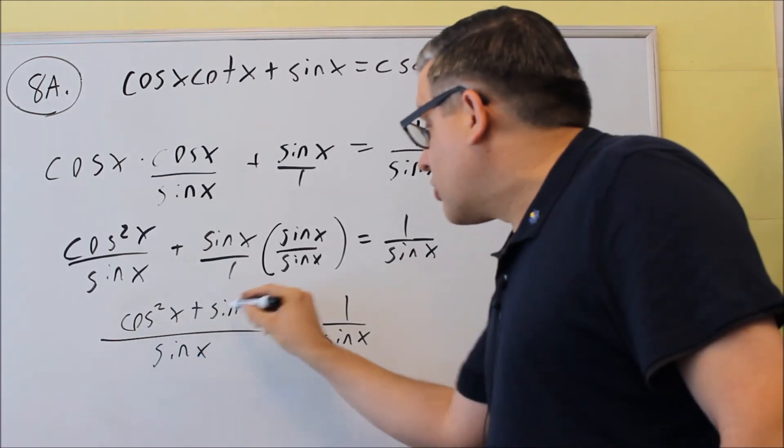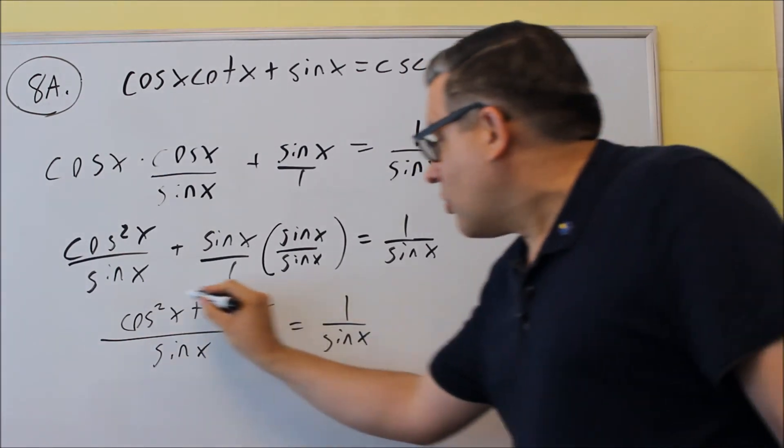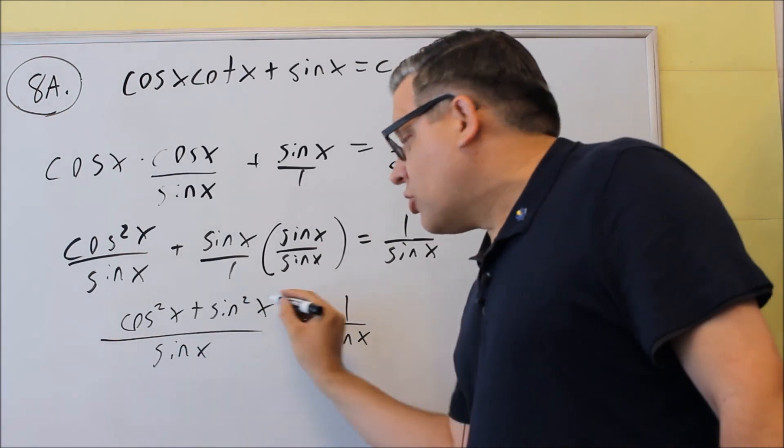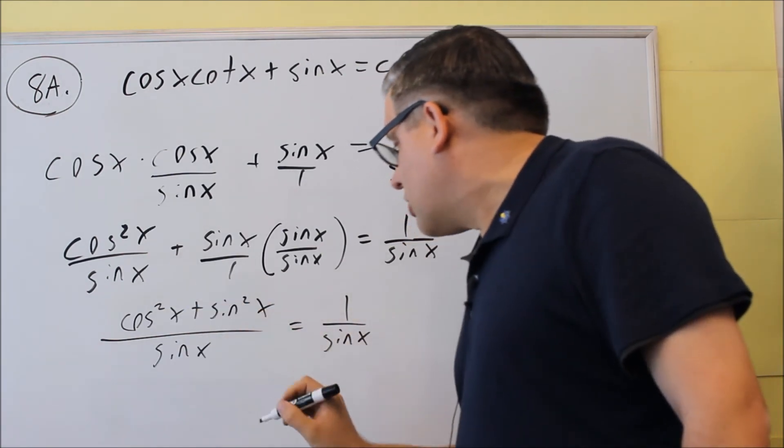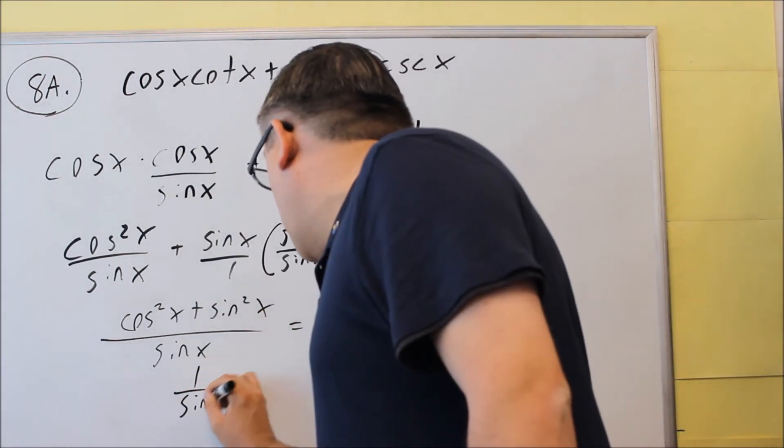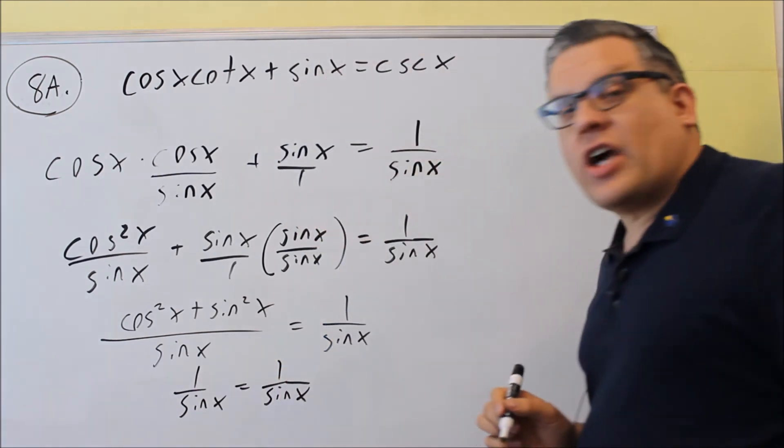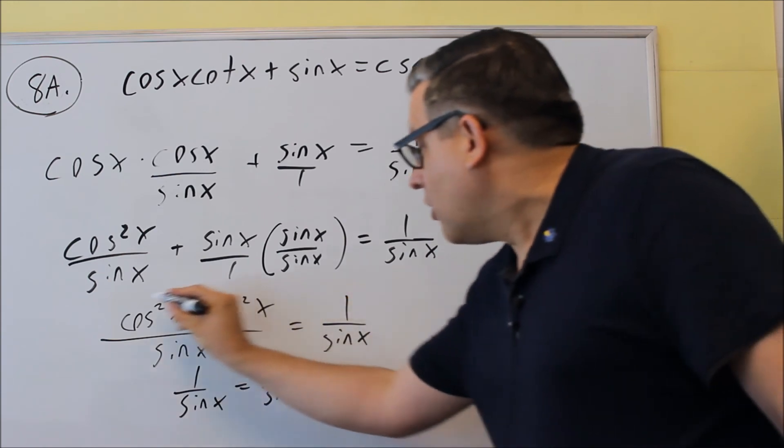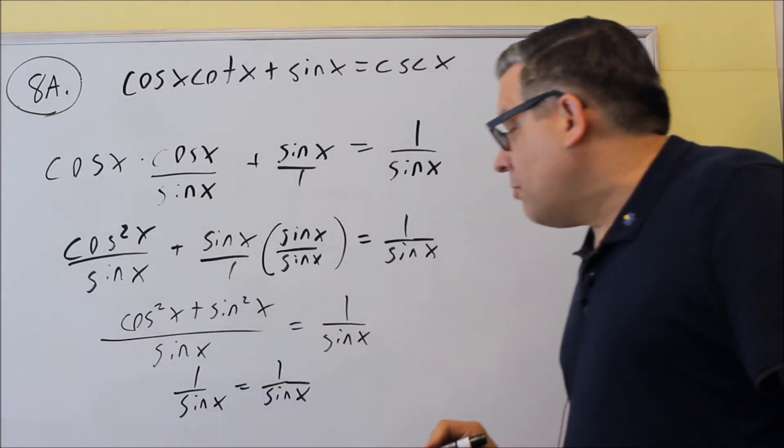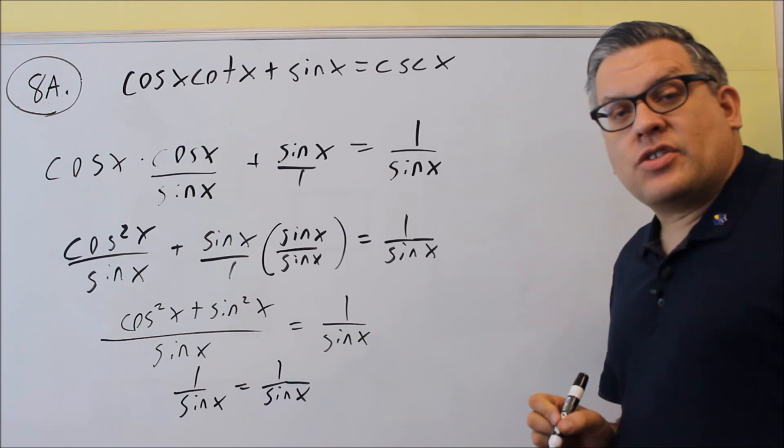We've got cosine squared plus sine squared. This whole thing is equal to 1. So I'm going to replace all this and put in a 1. And then I get 1 over sine x equals 1 over sine x. So I get both sides are going to be equal. So again, I just took out all this, replaced it with a 1. And then I got both sides equal.